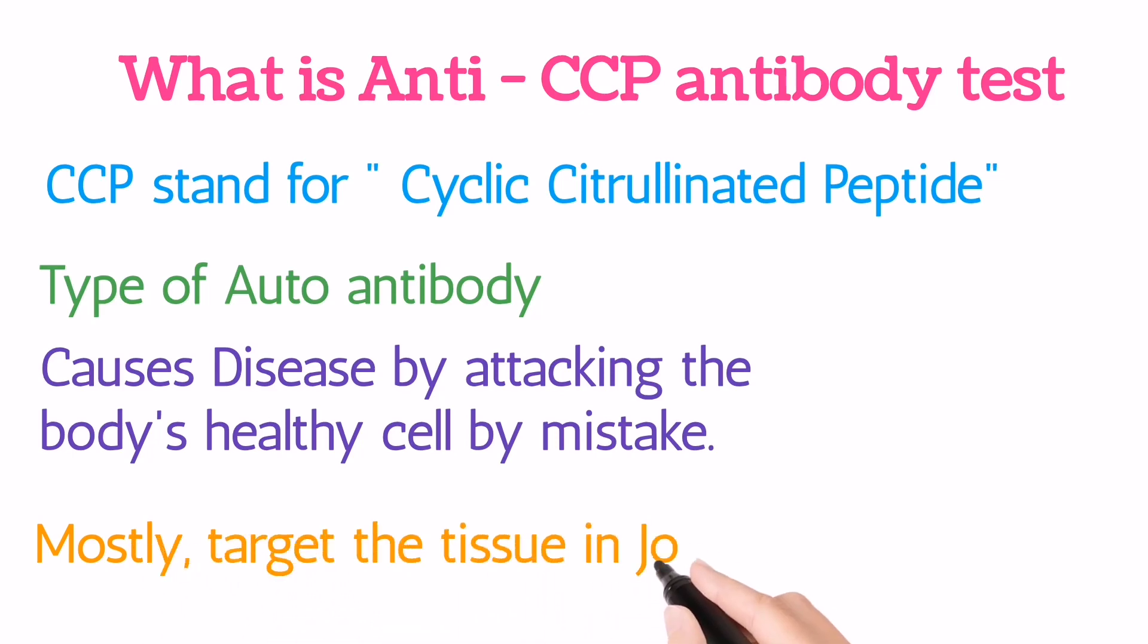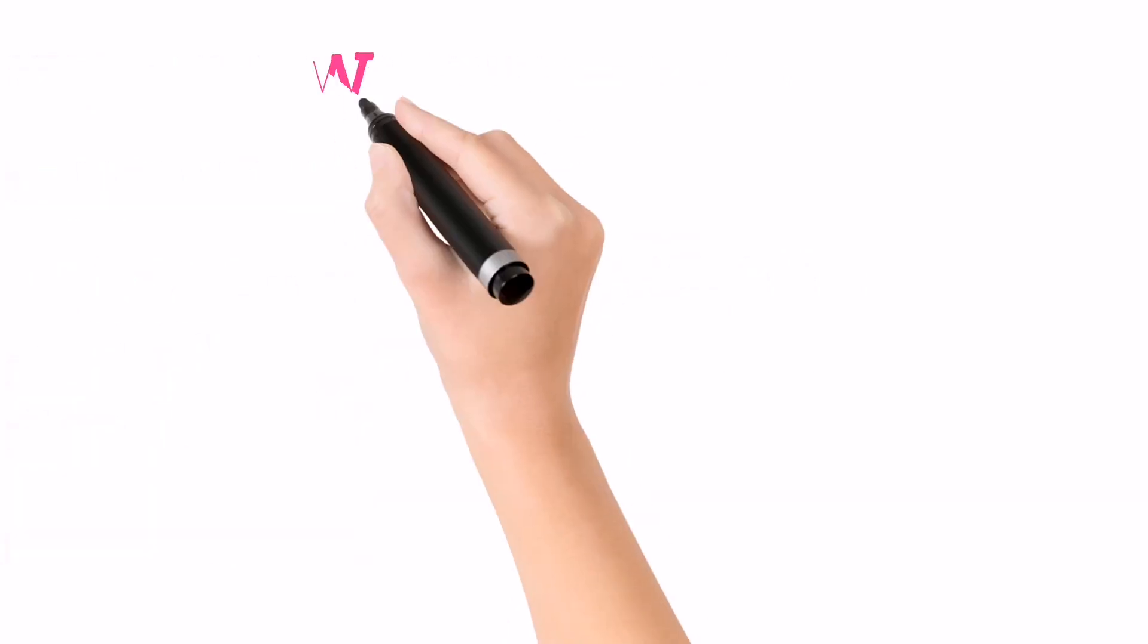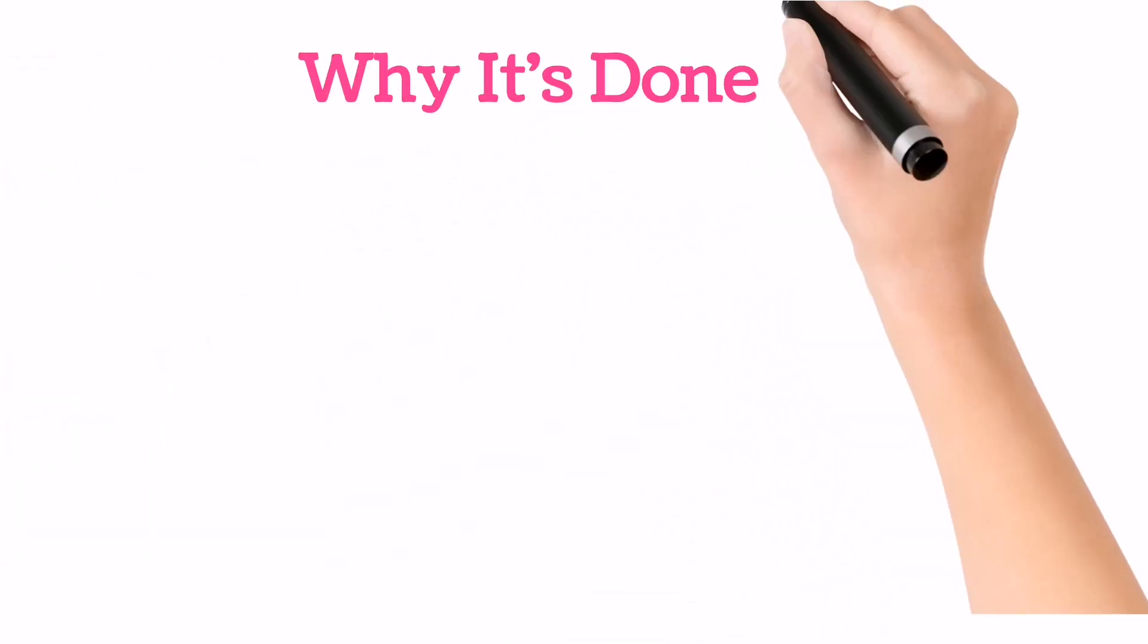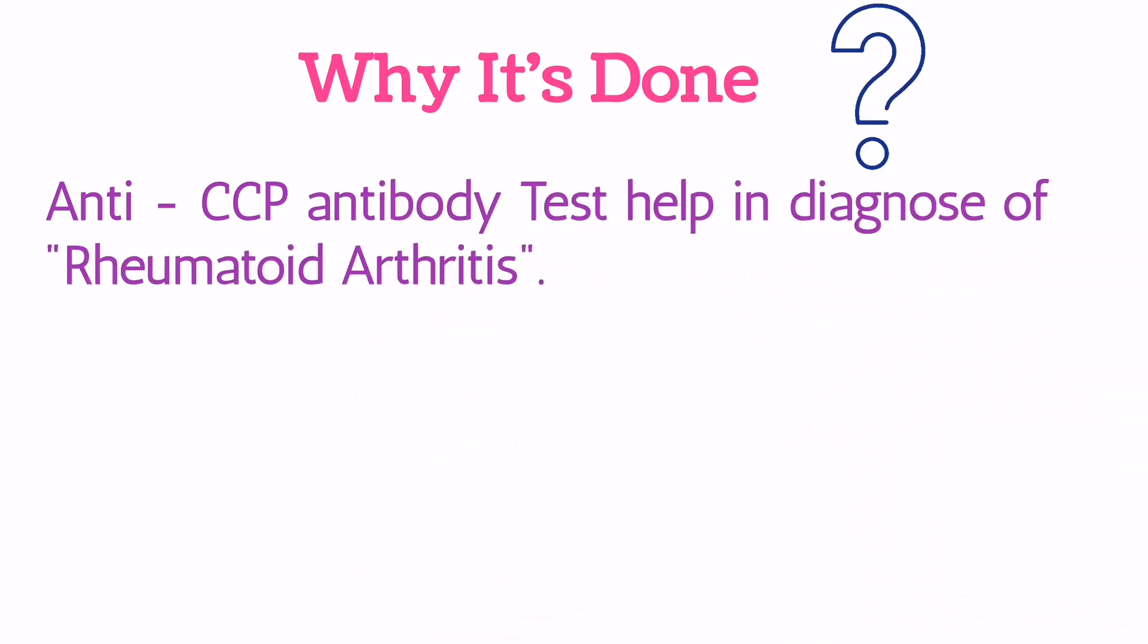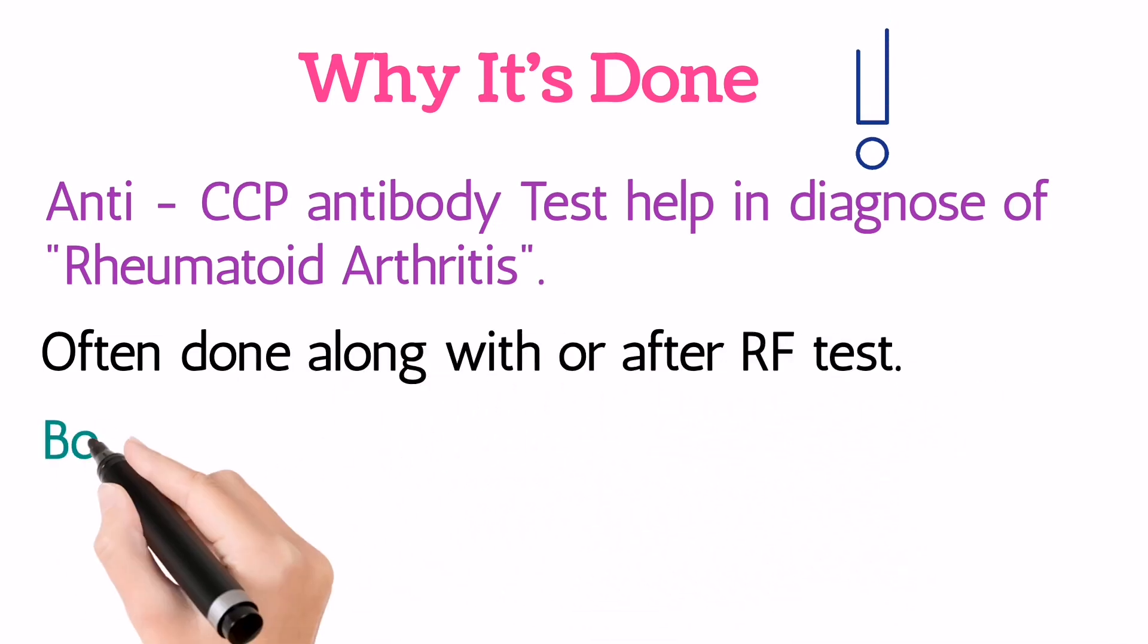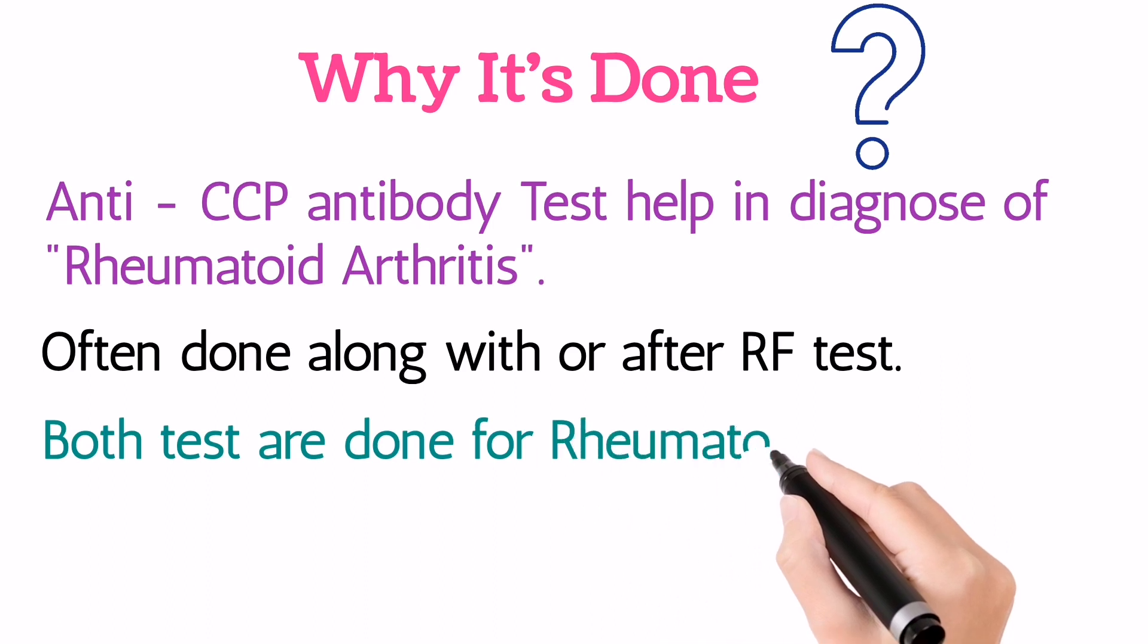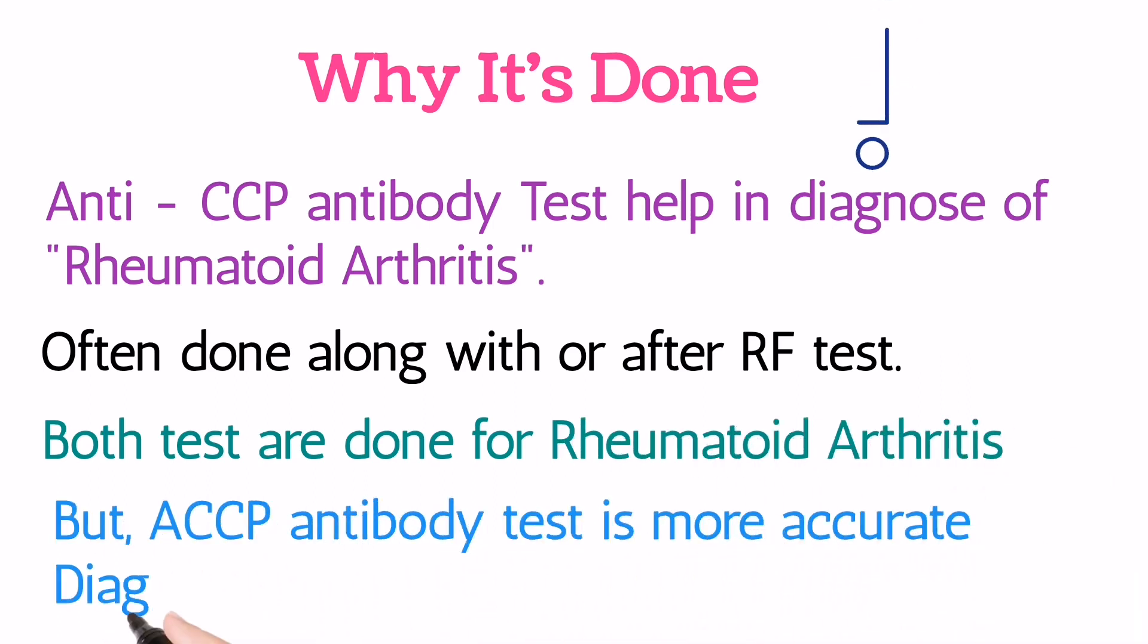Now why is the anti-CCP test done? The anti-CCP antibody test is a type of diagnostic test that helps in diagnosing rheumatoid arthritis. It's often done with or after rheumatoid factor test. Both these tests are recommended for rheumatoid arthritis, but anti-CCP antibody test is more accurate and specific.